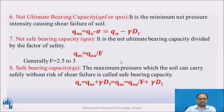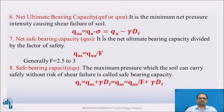Next, net ultimate bearing capacity, denoted as Q_NF or Q_NU. It is the minimum net pressure intensity causing shear failure of the soil. Q_NU = Q_U − σ, where σ is the overburden pressure. We subtract the overburden pressure from the ultimate bearing capacity to get the net ultimate bearing capacity.